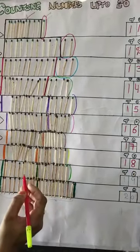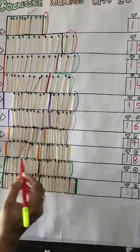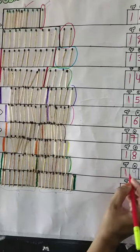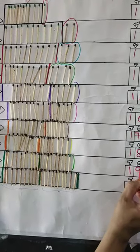Here we have 19 magic sticks. 10 will be represented as 1 10 and 9 loose sticks will represent 9 1s.